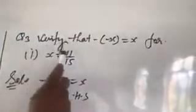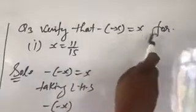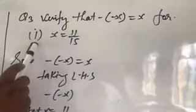Now next question, Question Number 3: Verify that minus bracket minus x equals x. First part: x equals 11 upon 15. Solution — taking LHS: minus bracket minus x. Put x equal to 11 upon 15, then minus of minus 11 upon 15 — minus minus becomes plus — equals 11 upon 15.